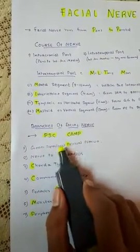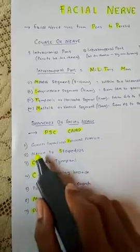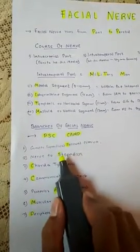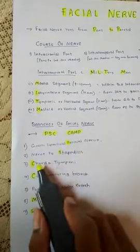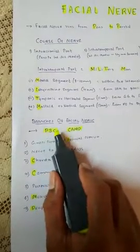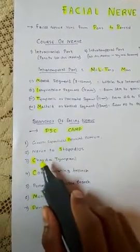The second branch is the nerve to stapedius, where S stands for the starting letter of stapedius. The third one is the chorda tympani, where C stands for the first letter of chorda tympani.